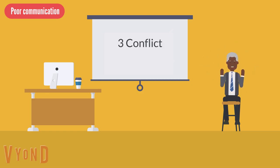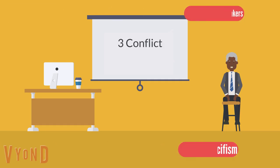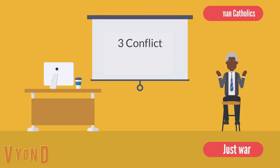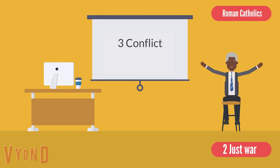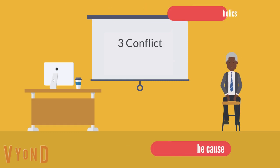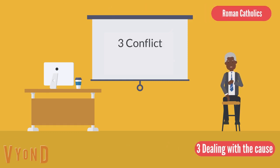Peacekeeping forces were sent in to help, but not enough to make a real difference. One Christian response is pacifism. They believe all conflict can be resolved without violence and they follow the teachings of Jesus on reconciliation. The Quakers are an example of Christians who think like this. Another response is just war. Christians believe a war is just if the intention behind it is good, if all other ways of resolving the conflict have been tried, and if there is a reasonable chance of success. Roman Catholics agree with this. Finally, whether a Christian is a pacifist or believes in just war, all Christians recognize that often the cause is something which needs to be fixed first. For example, injustice can lead to conflict, so equality must exist before it can be solved.